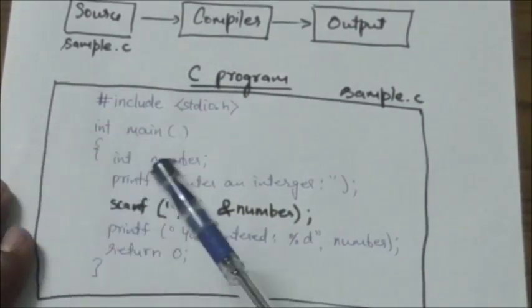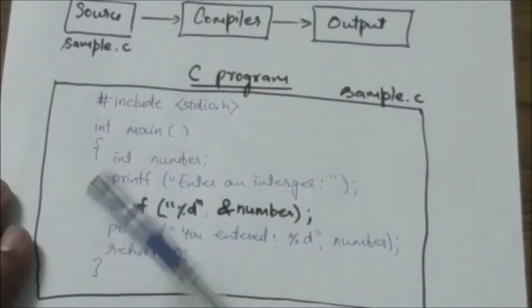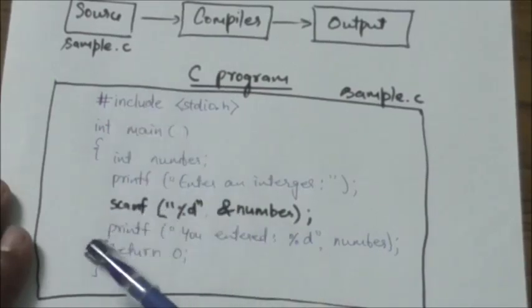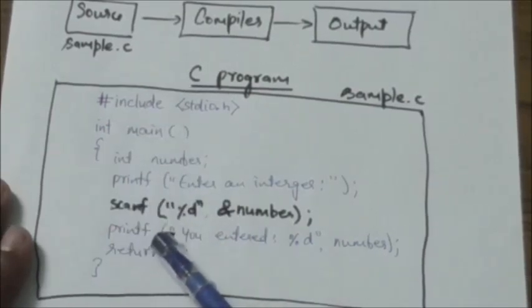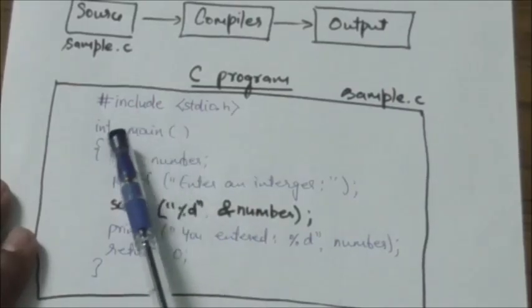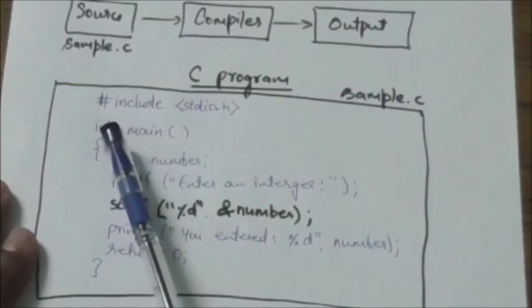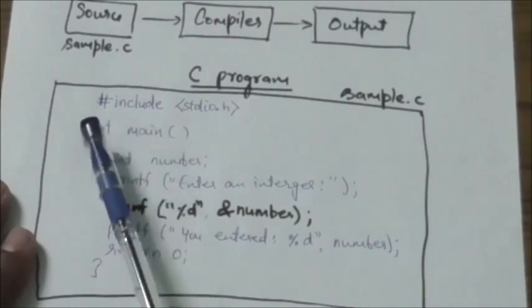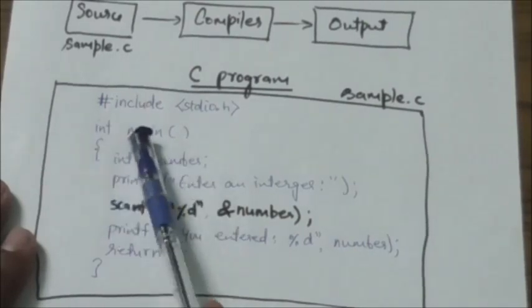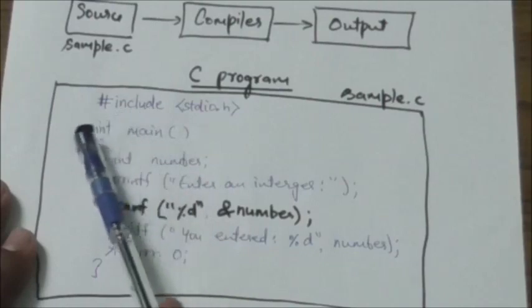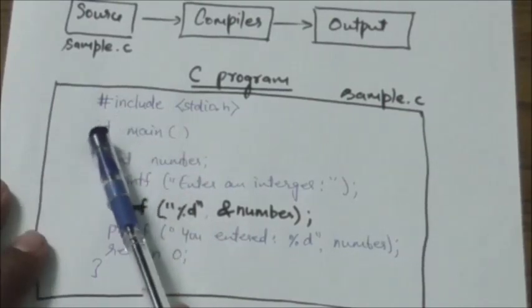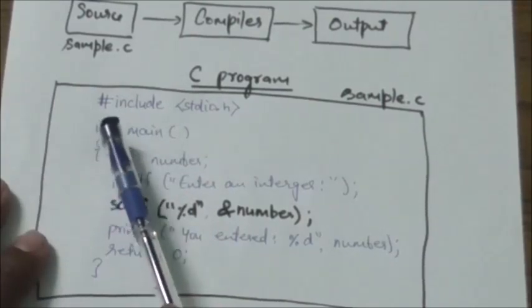C is a function-oriented programming language, which means all C code runs inside functions. Here you can see this main function. This main function has a return type of int, which means this main function returns an integer value.